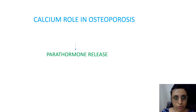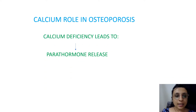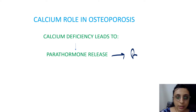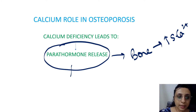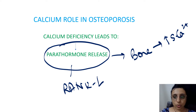What is the role of calcium in osteoporosis? Calcium deficiency results in increased parathormone release, which tries to resorb the bone and increase serum calcium — that is the role of parathormone. This parathormone in turn activates or increases RANKL and thus causes osteoclast activation.